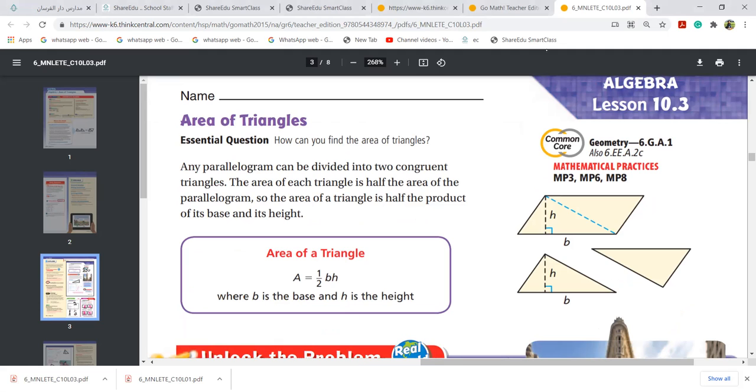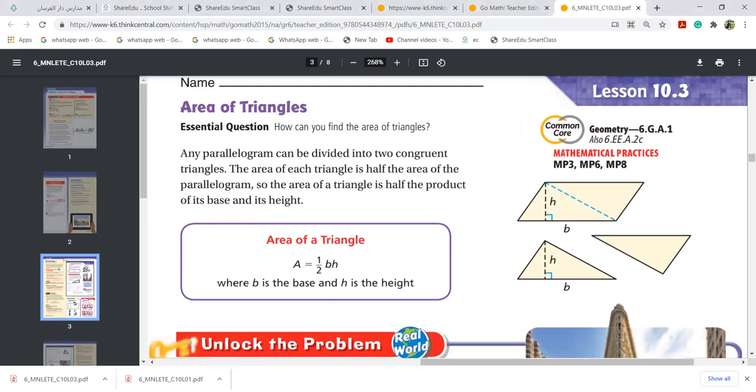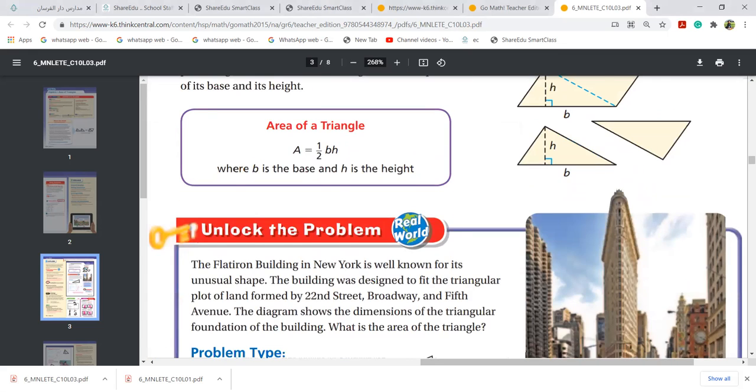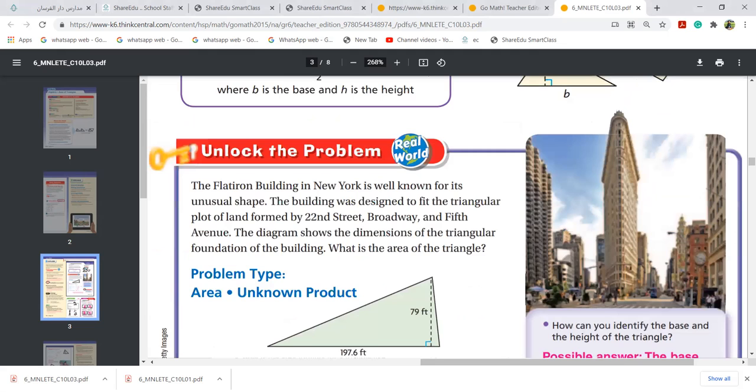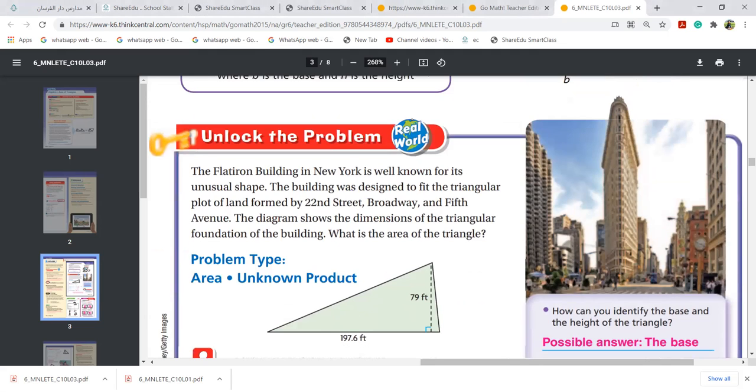You have to remember half BH. If I ask you area of parallelogram, you will send me BH only. That is base and height. If I ask you area of triangle, it means half times base and height. Half times base and height. Please, can you read this?